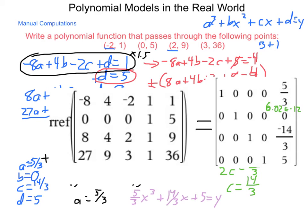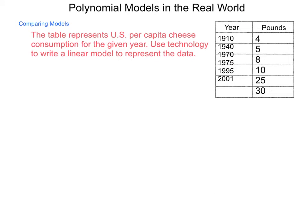But, what else can we do with this? Let's take a look at an actual situation that we can use a comparison of matrices or a comparison of regressions. So, the table represents U.S. per capita cheese consumption for the given year. Use technology to write a linear model to represent the data. So, if we call 1900 the year 0, X equals 0 represents 1900, and we put this into a calculator, we can come up with a series of regressions.